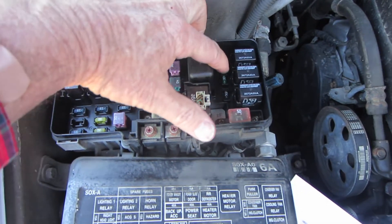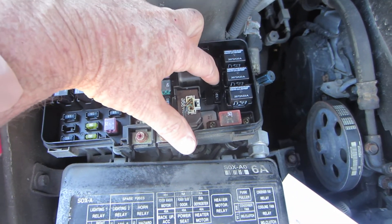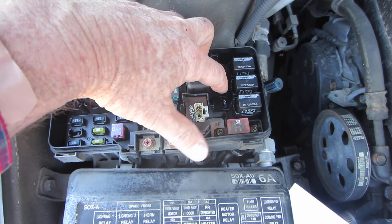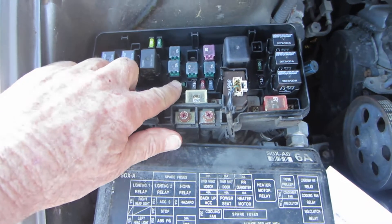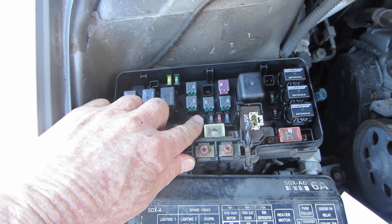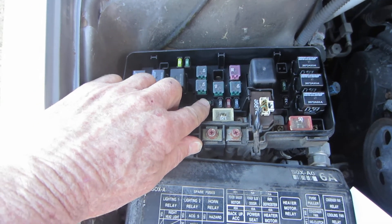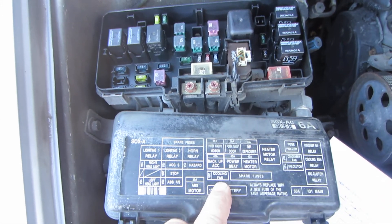This is your 30 amp fuse here for the condenser fan. Your 30 amp fuse here for your cooling fan. So the layout is right here.